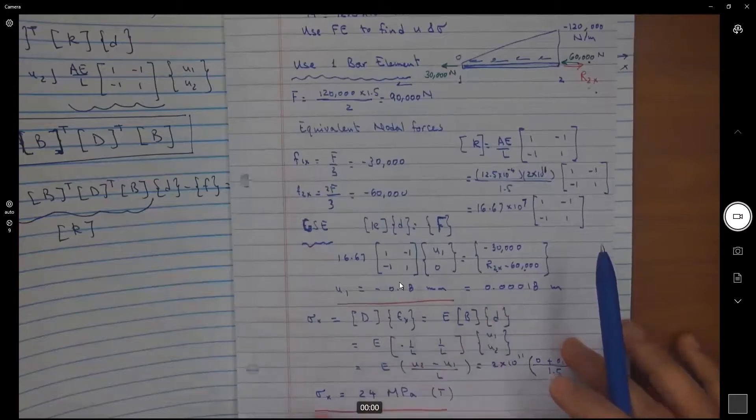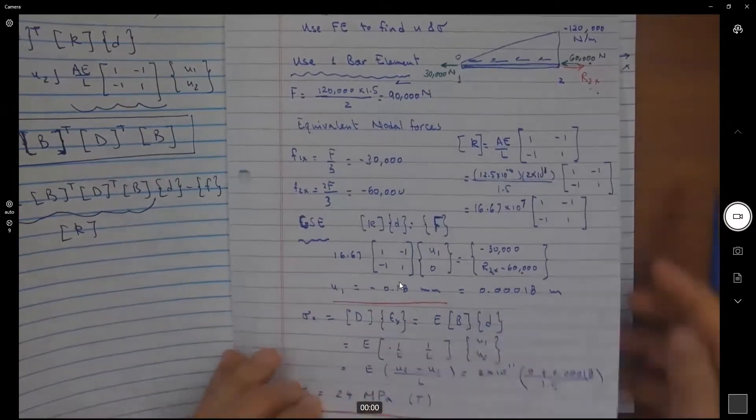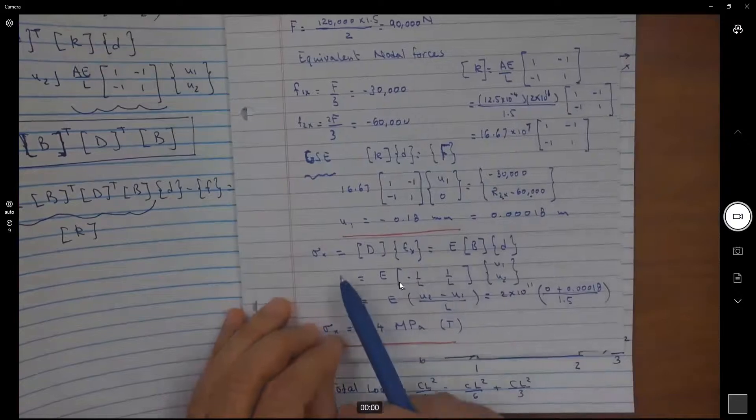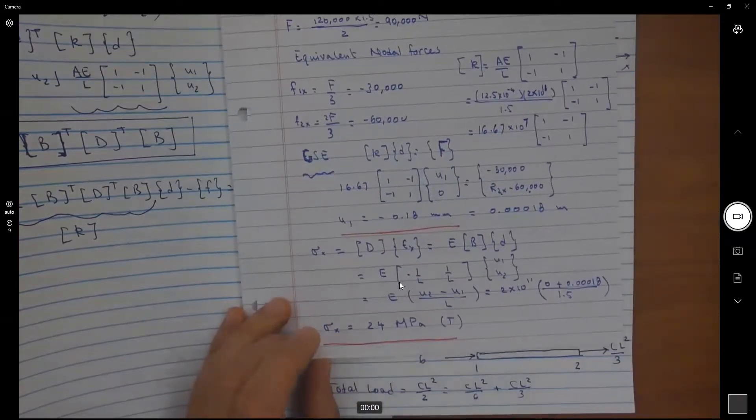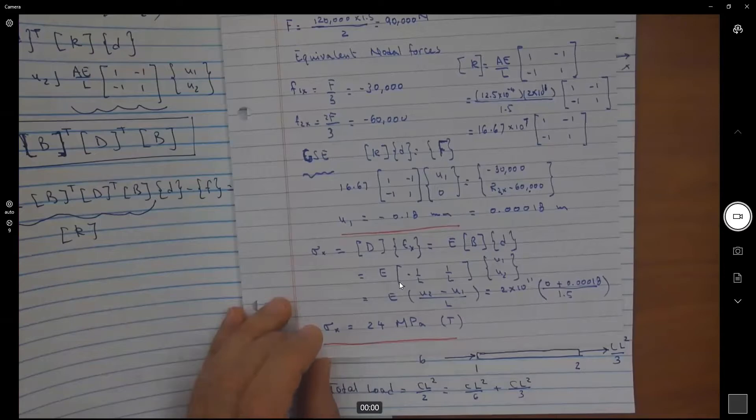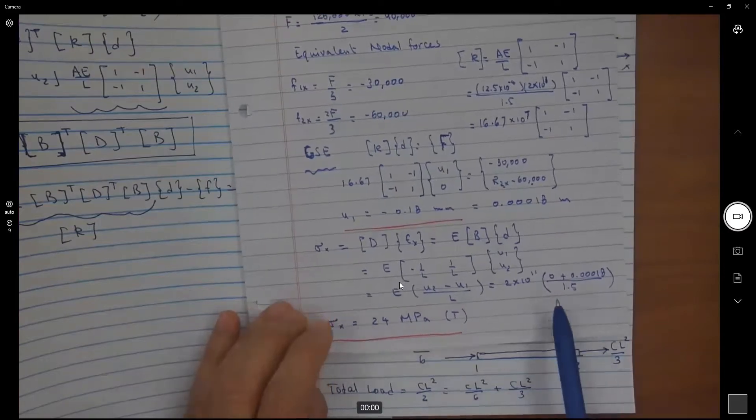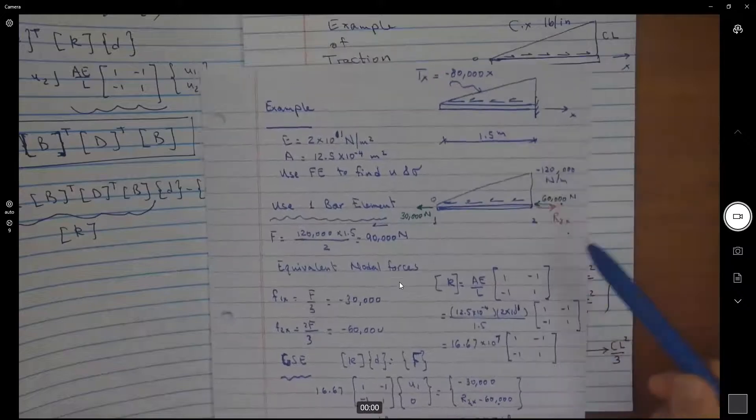I have the free end here. U2 is zero, but I was able to find U1, 0.0018. I can use the nodal displacements to find the stress in the bar, and I find the stress in the bar to be equal to 24 megapascals. So I find here a solution using one element.